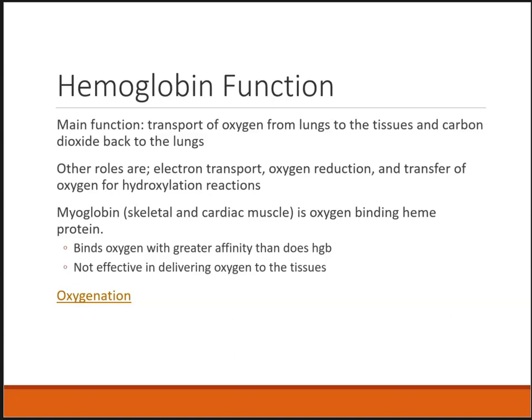The function of hemoglobin is to bring oxygen from the lungs to the tissues and to take carbon dioxide away from the tissues back into the lungs. It also does electron transport, oxygen reduction, and transfers oxygen for hydroxylation reactions. There is another protein that binds oxygen called myoglobin, usually seen in skeletal or cardiac muscle. When red blood cells drop off oxygen to skeletal and cardiac muscles, myoglobin grabs that oxygen and brings it into those tissues.